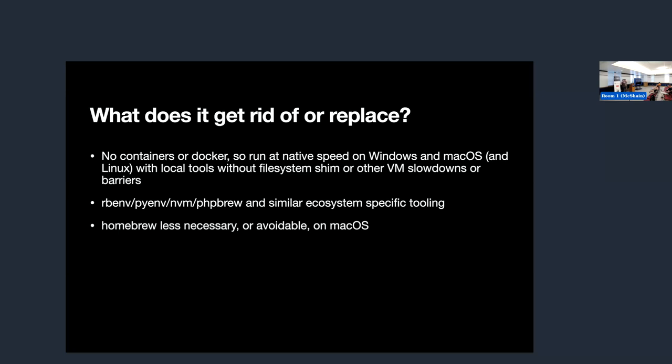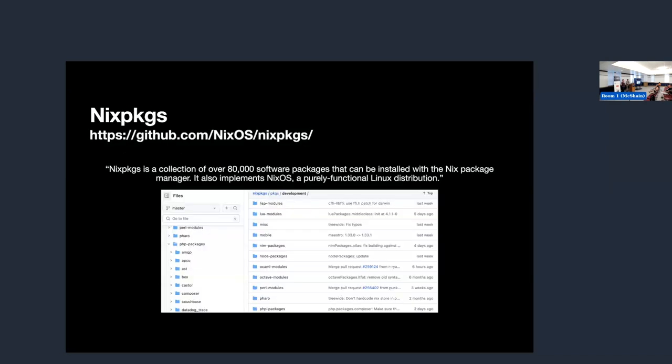This isn't to say that every package in Nix packages is necessarily as recent as what's available in Homebrew. Sometimes you have to go over to Homebrew to get something, but it can replace most of that. Nix packages is a program written in Nix that has over 80,000 software packages that can be installed using the Nix package manager. It also is the implementation of NixOS, which is a Linux distribution that we're not going to talk about today.